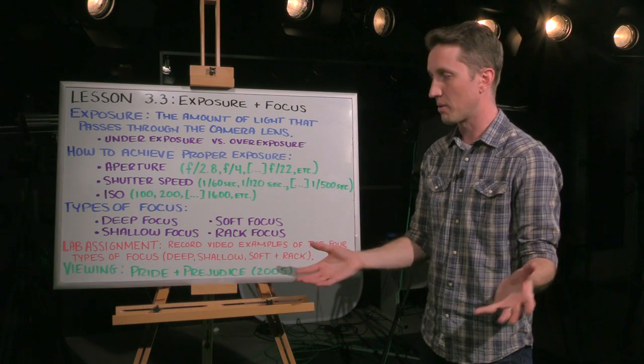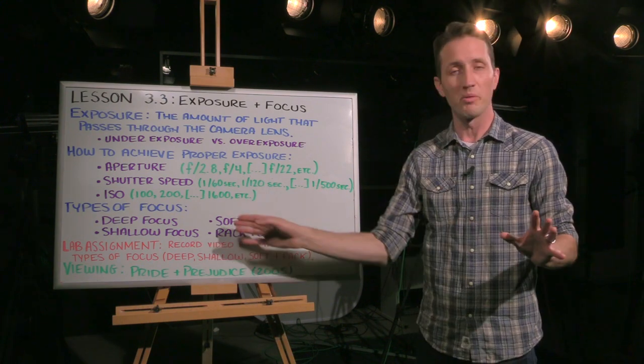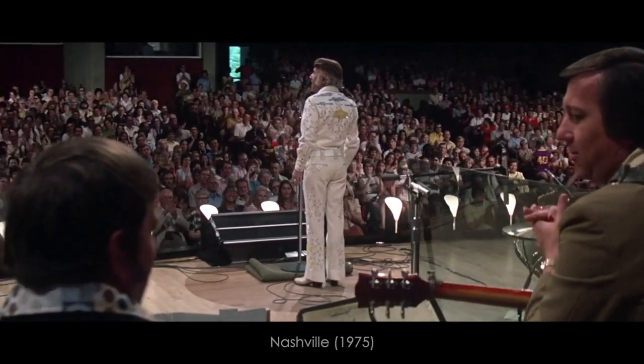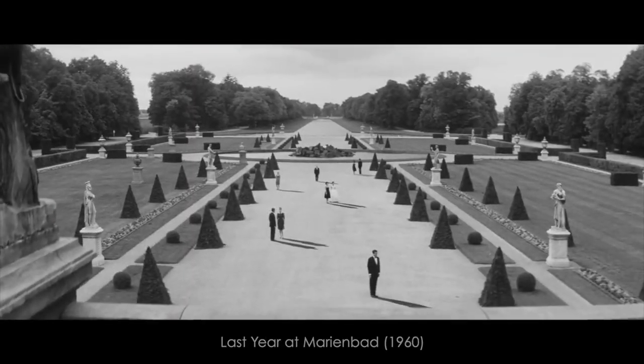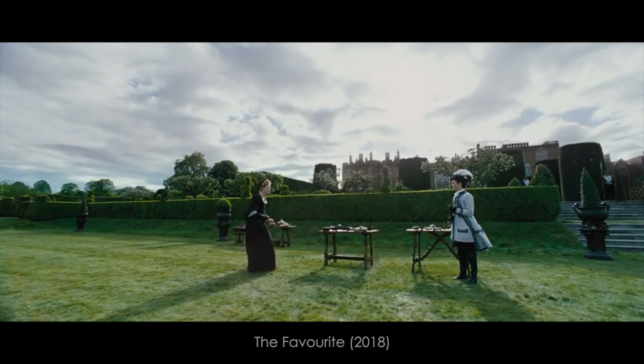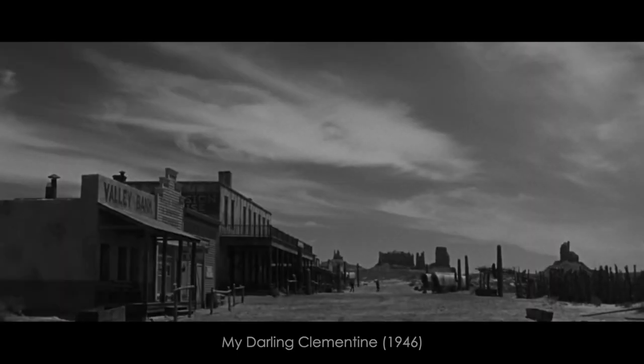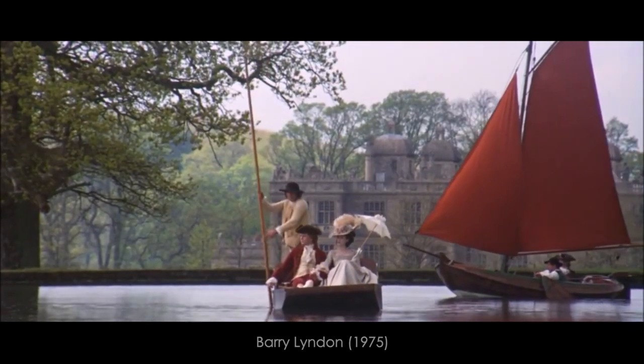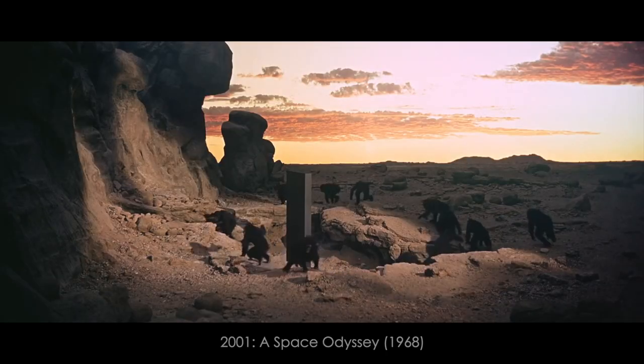And all of this information ties into the next part of this lecture, which is types of focus. Now, with deep focus photography, we're talking about images where everything in the image is crystal clear. Whether it's the sky in the background, the buildings in the mid-ground, or your subject in the foreground. And this creates this sense of depth within the image.